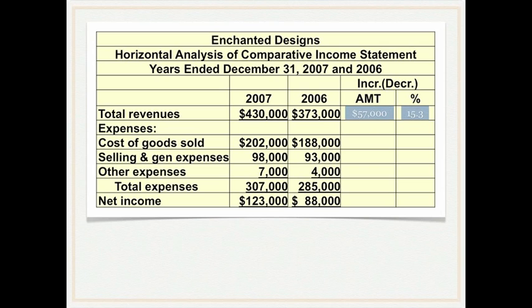For practice, push pause on your player right now and go ahead and calculate the expenses — total expenses — and net income change in both dollars and percent. Once you're finished, push play again and we'll look at them all together. Hopefully you calculated these on your own and have some numbers in front of you that we can now check.